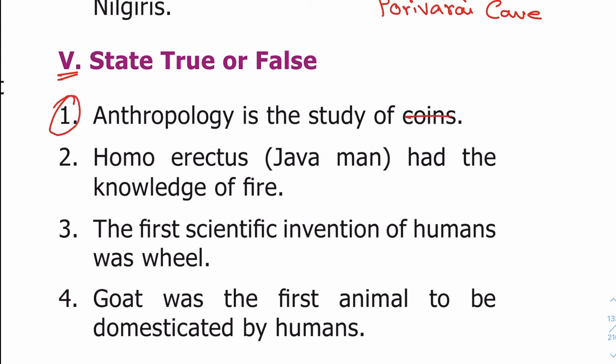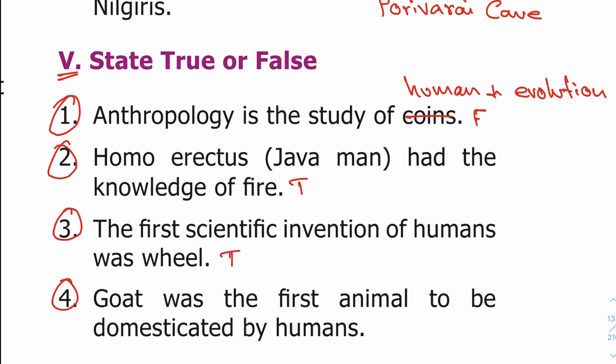True or false exercise. First statement: false — Anthropology is the study of human and human evolution, so that statement is false. Second statement: Homo erectus, Java man, had the knowledge of fire — true. Third statement: the first scientific invention of human was fire — true. Fourth statement: dog was the first animal to be domesticated by humans — that statement about gold being first is false; dog was the first domesticated animal.